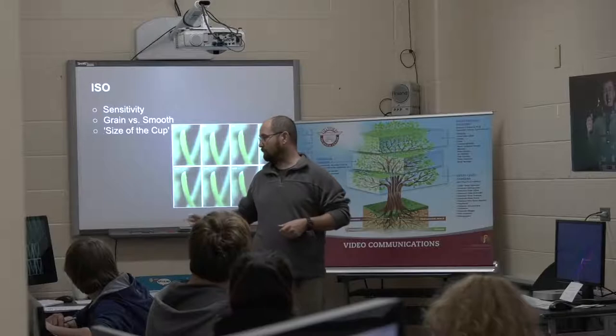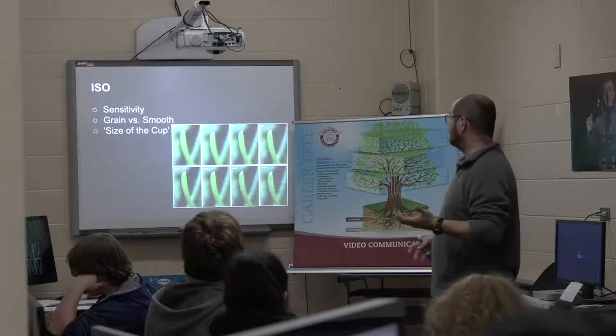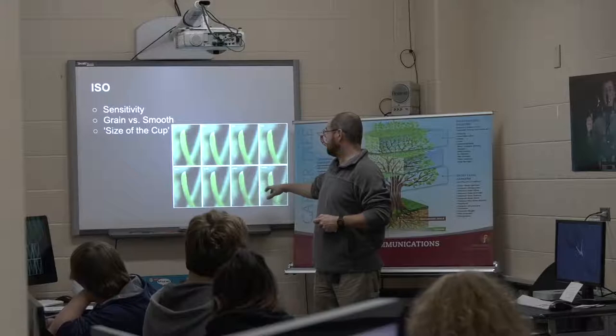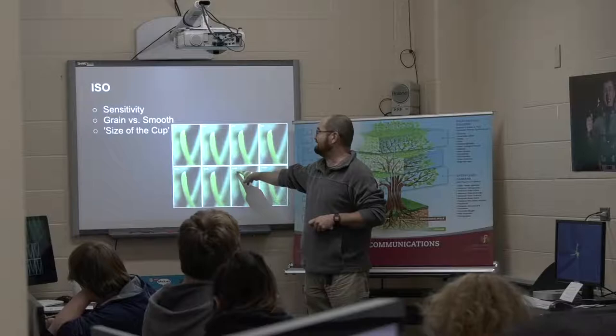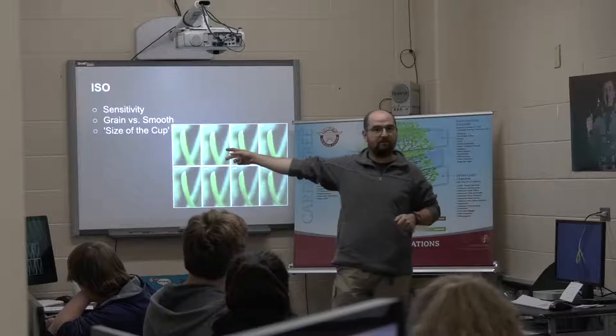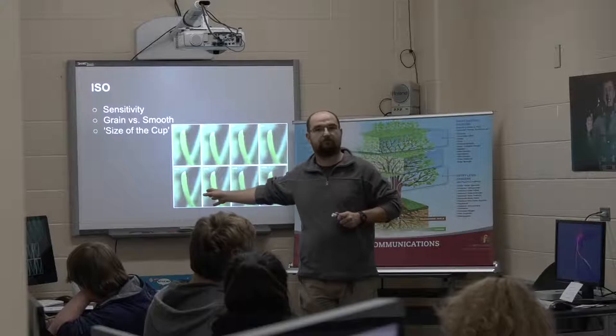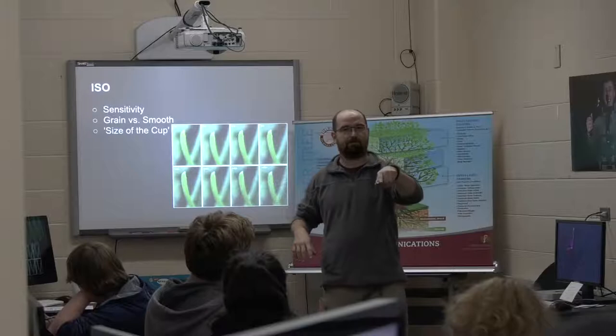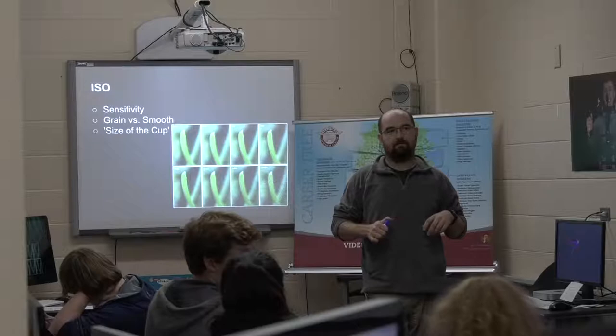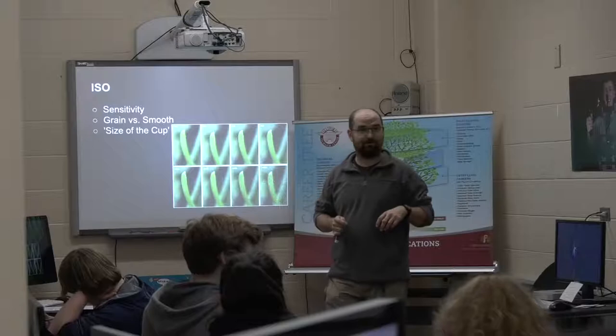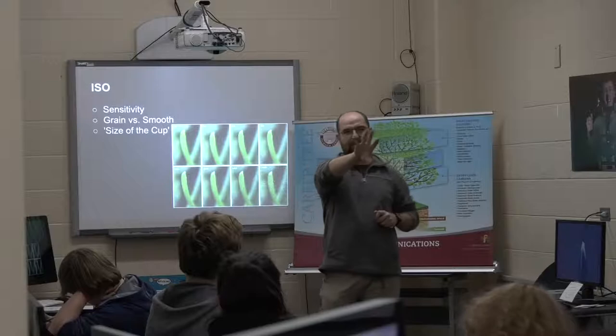Graininess does increase as we raise ISO, but newer cameras actually handle it really well. My current DSLR at 6,400 probably produces an image equivalent to what an older camera produces at 200. We shouldn't always scoff at high ISOs because that's relative to the equipment. The 6D Mark 2 was looking good at 25,000 ISO in this room — the lower settings looked very dark.